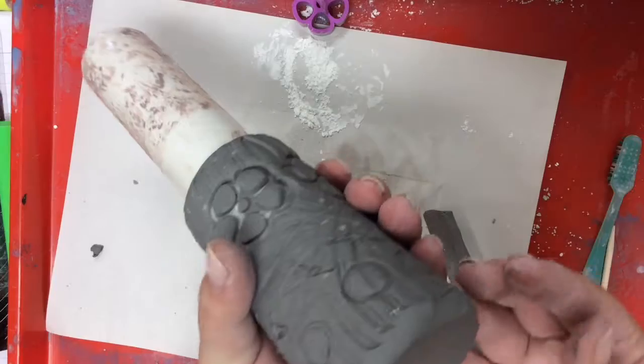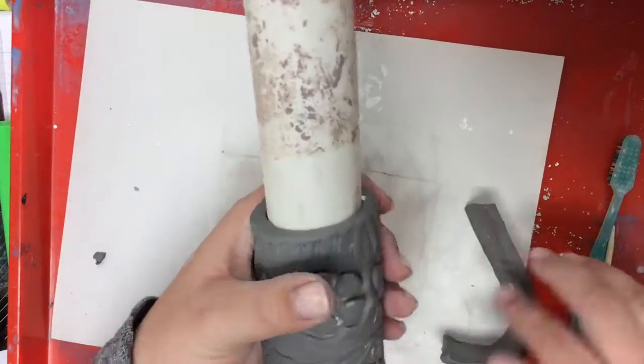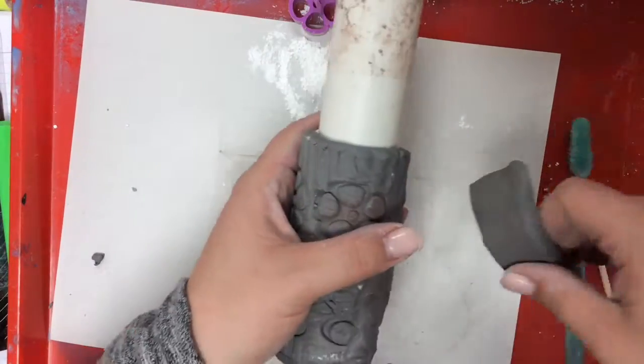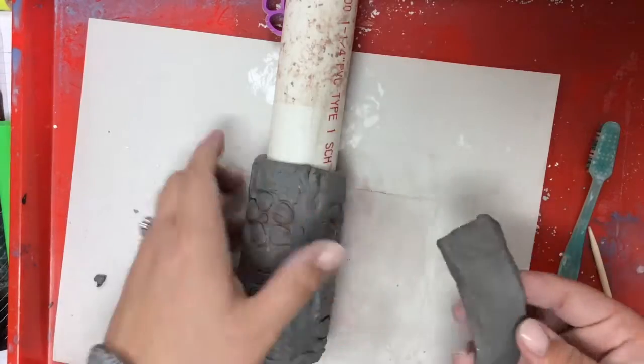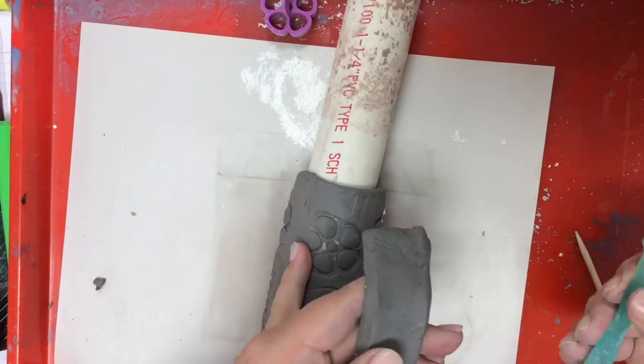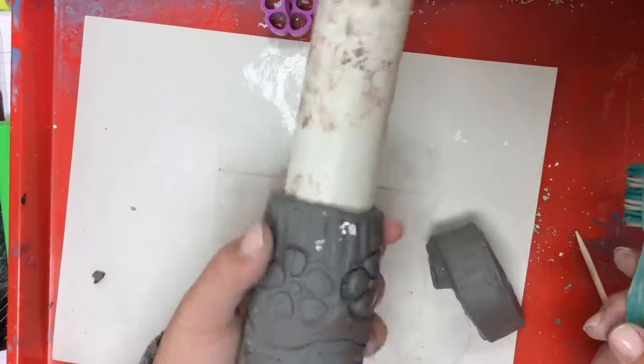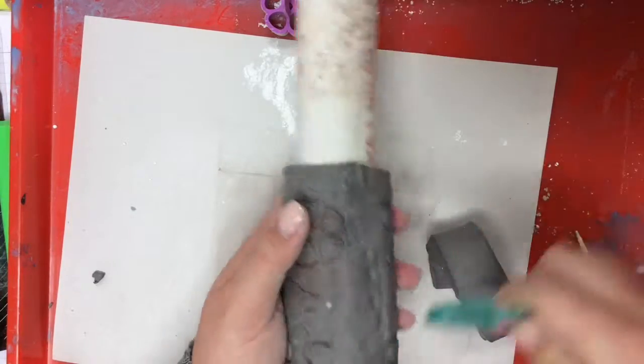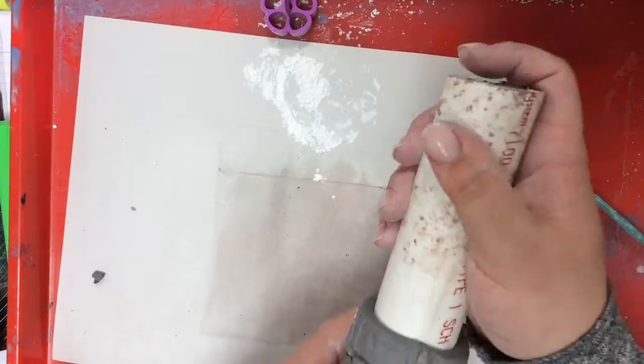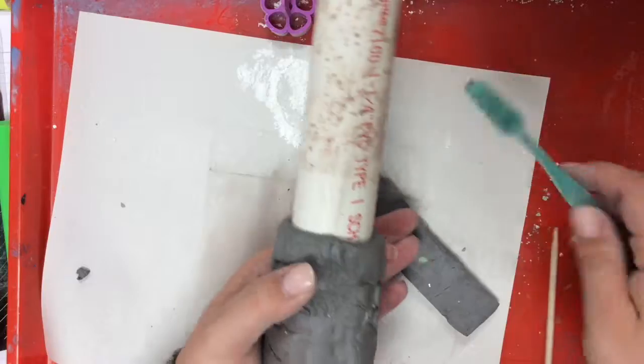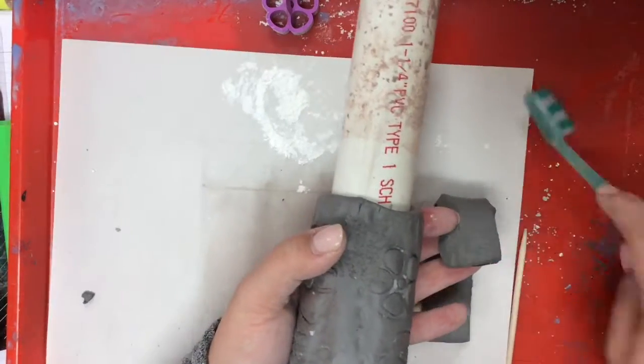Next, we are going to be adding the handle. Go ahead and smooth on the bottom that I give you and then wherever your pieces of clay join together, you're going to use a toothbrush. You're going to scrub the clay and then you're going to scrub the piece of handle so that you can add your handle on.